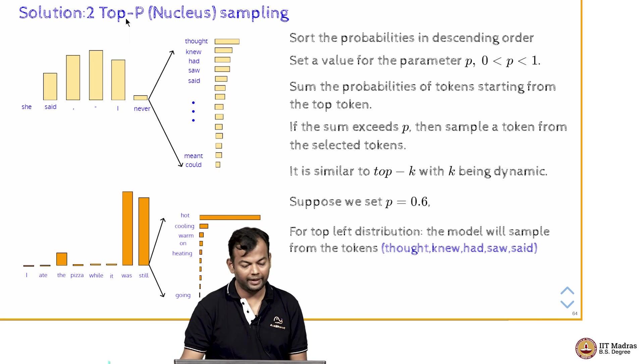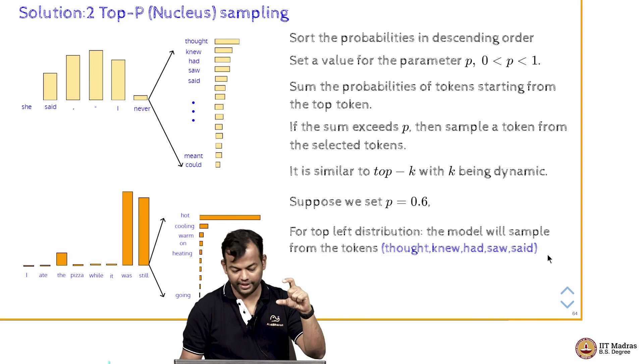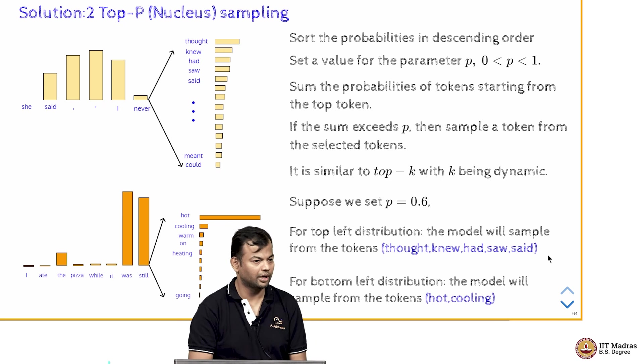So, for the top left distribution, we will sample from the tokens THOT, NEW, HAD, SAW, SAW because those are the tokens which account for 0.6. And for the bottom distribution, we will only sample from HOT and COOLING because those are the tokens which account for 0.6.